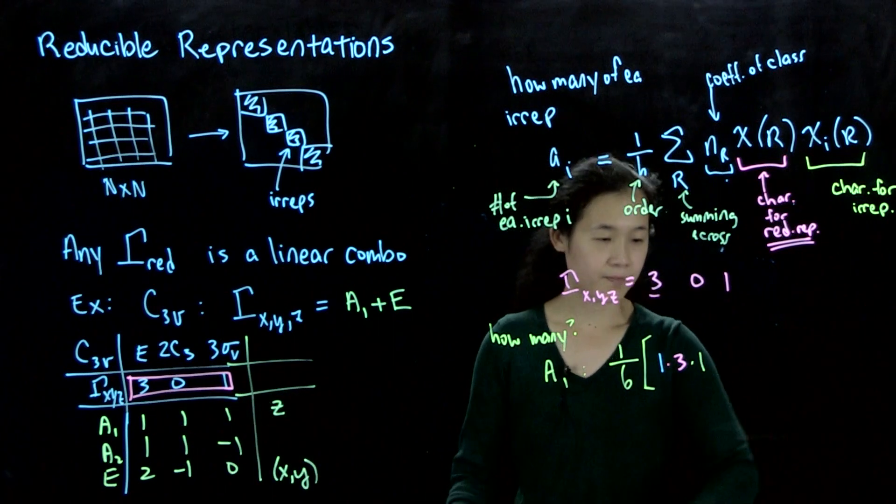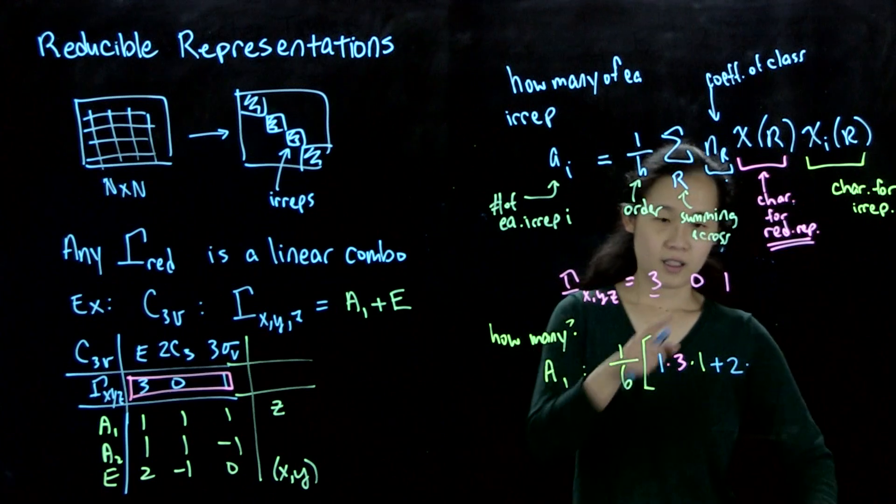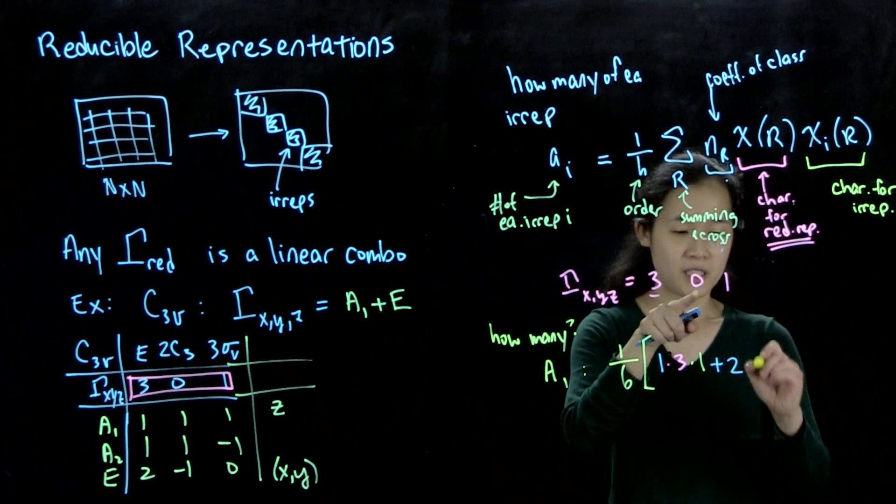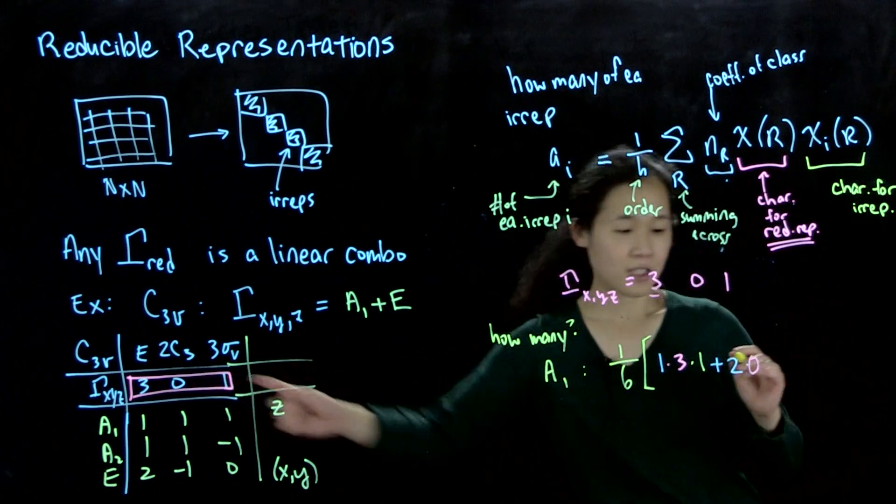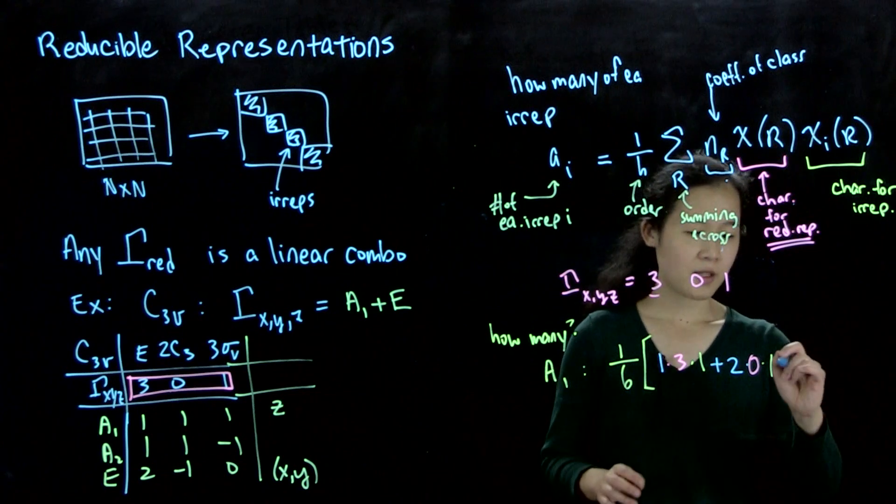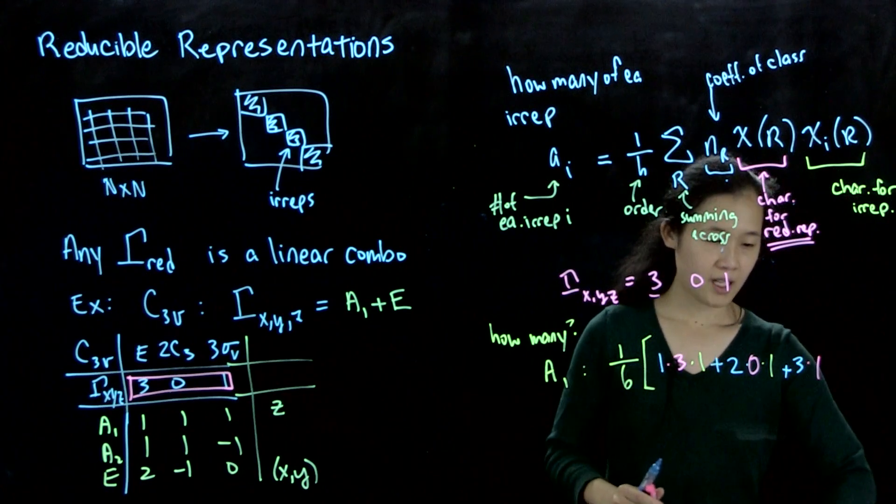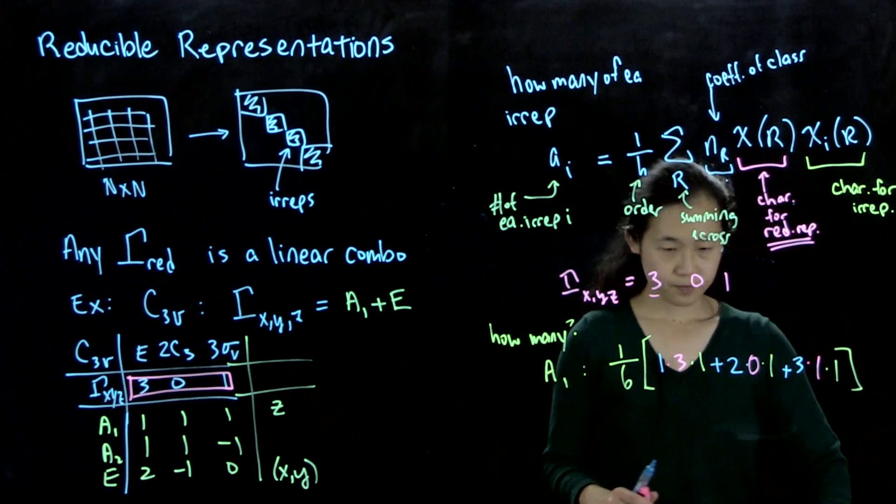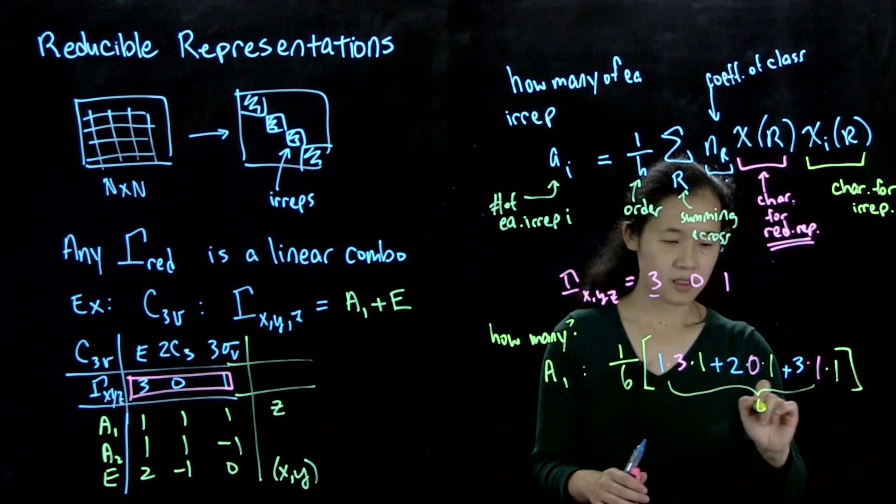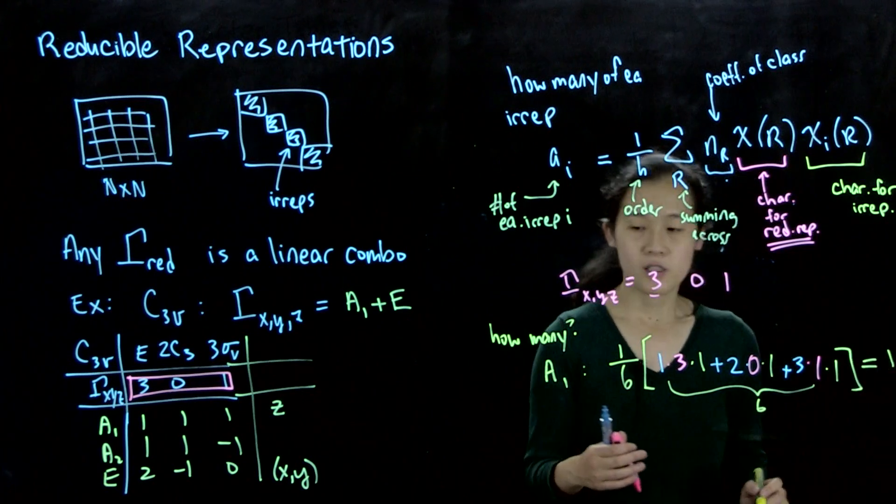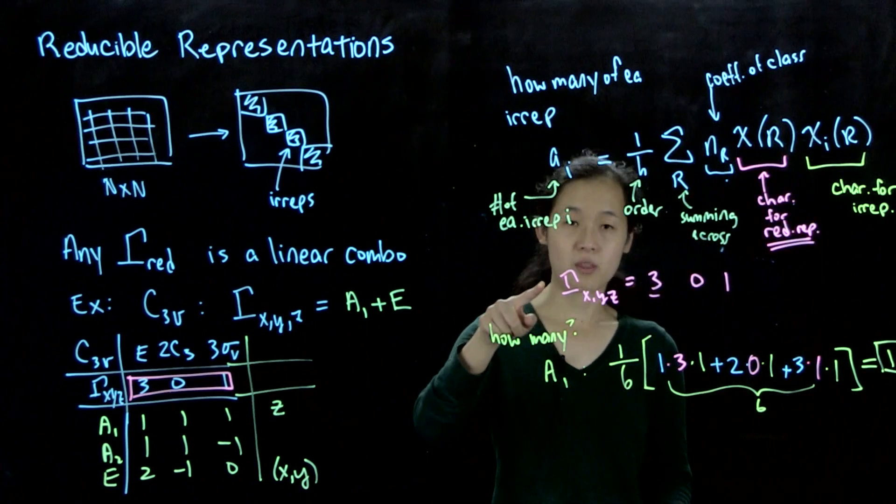Then we're going to add, plus the coefficient is 2 for the C3 class. The character under the reducible representation is 0, and the character under C3 for a1 is 1. The last one is the coefficient is 3 times 1 times 1. So as you can see, this is 3 plus 3 equals 6. So this equals, when you divide by 6, it's 1. What this means is we have one a1 irrep within this reducible representation.